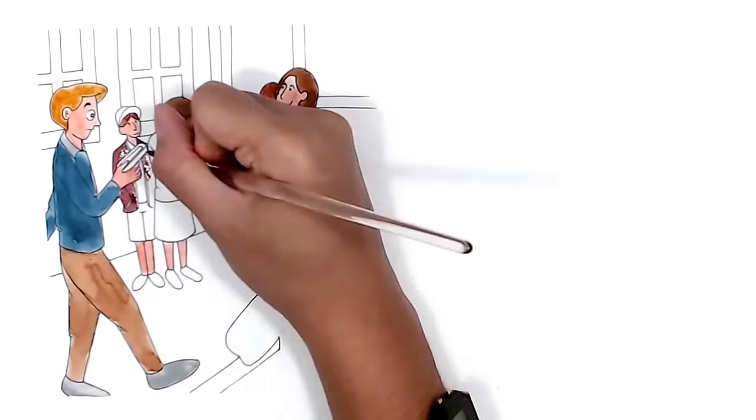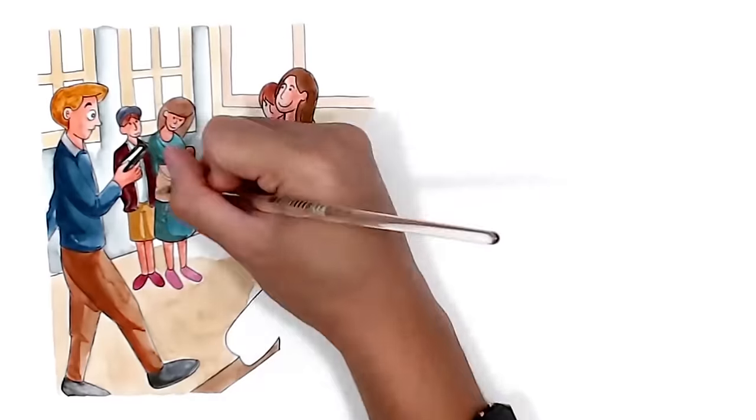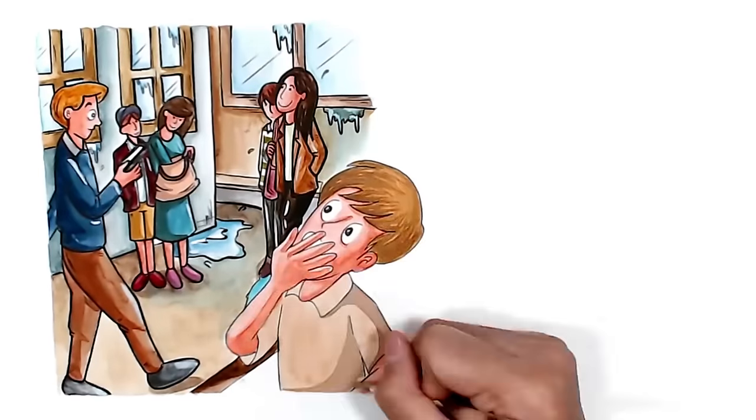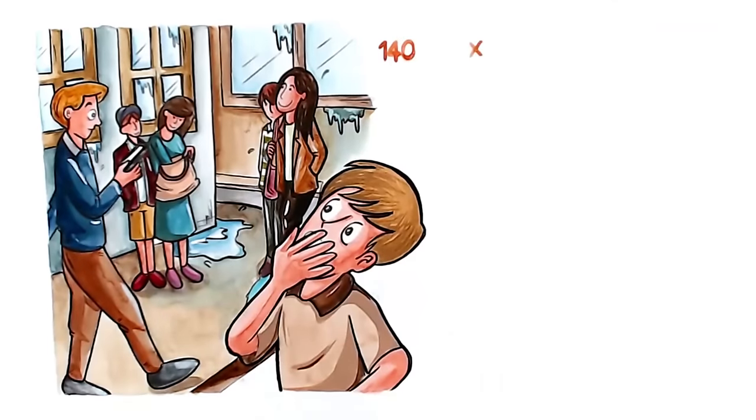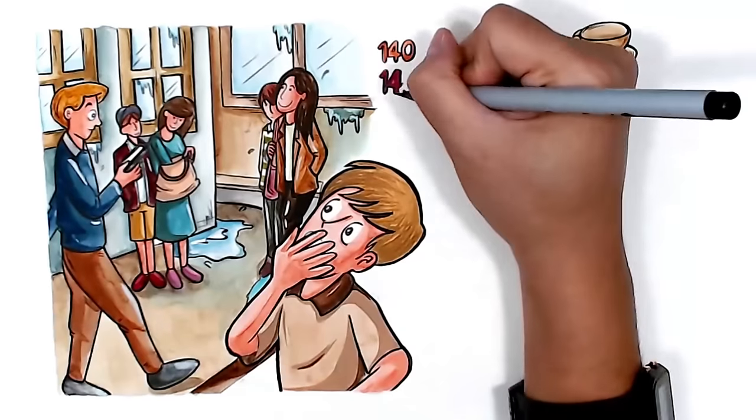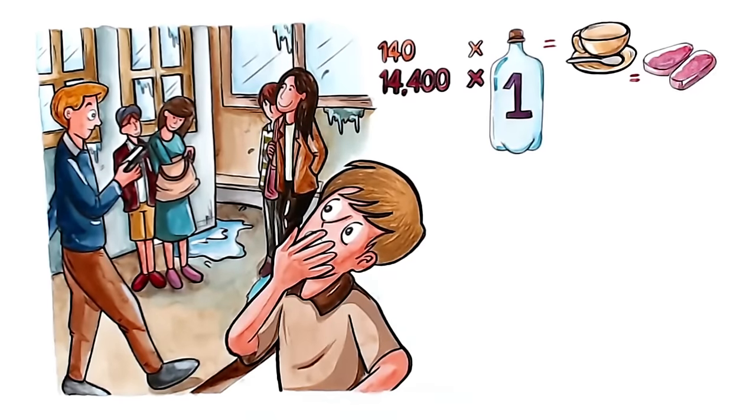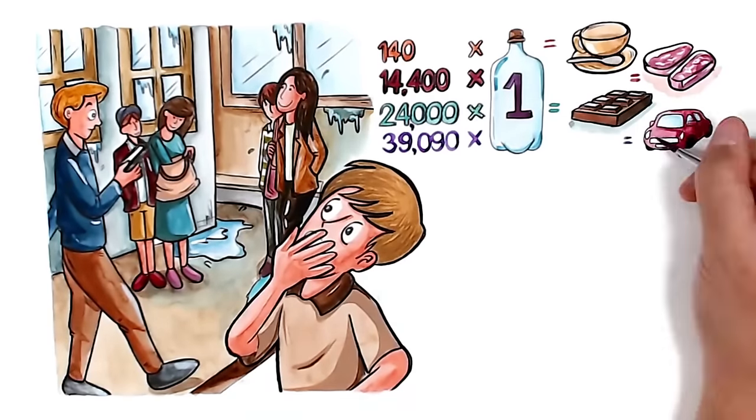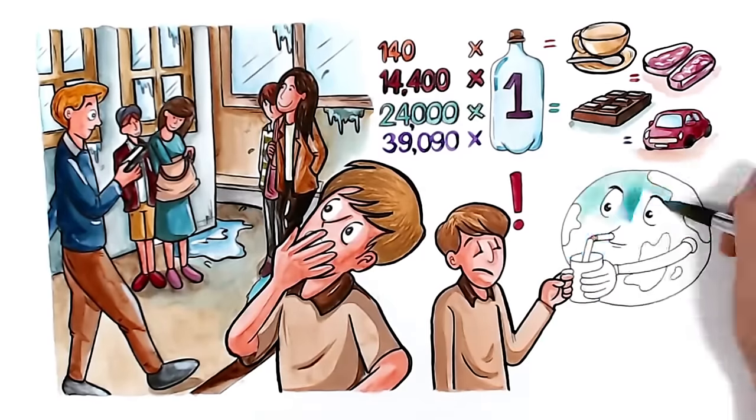And literally, we love our milkshakes. From start to finish, everyday things all around you have a bigger water footprint than you might imagine. For example, it takes about 140 liters of water to produce 1 cup of coffee, 14,400 liters to produce 1 kilogram of beef, 24,000 liters to produce 1 kilogram of chocolate, and 39,090 liters to produce a new car. Bigger sip than you thought, right?